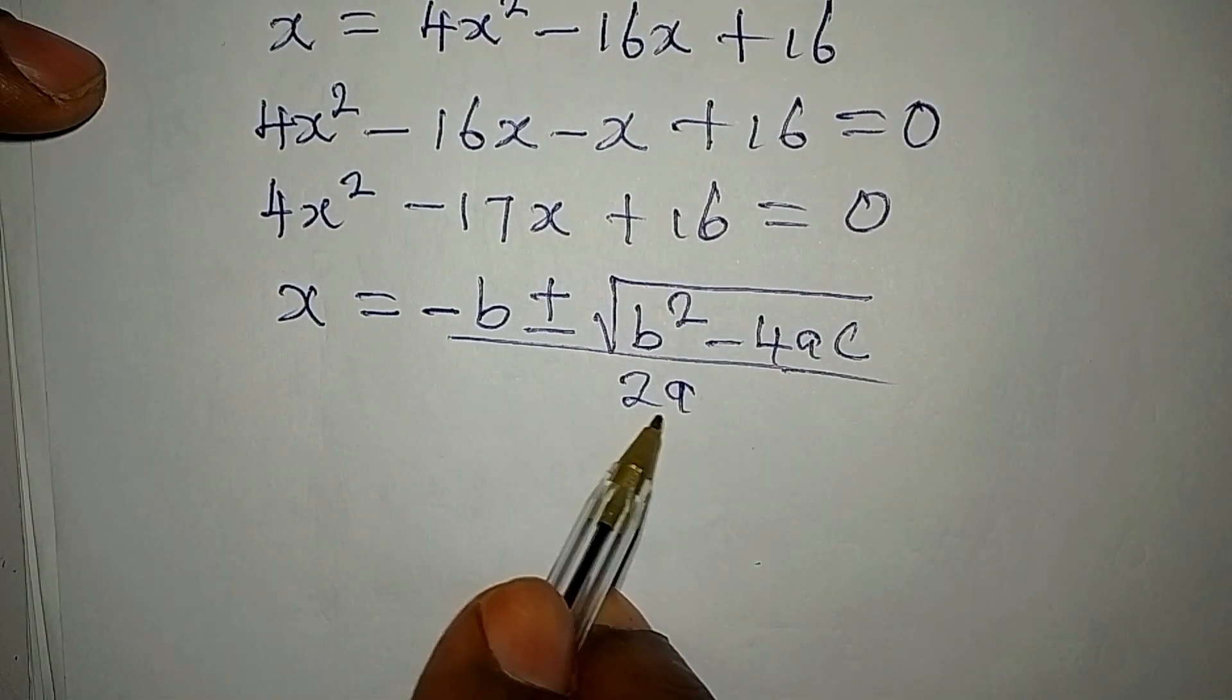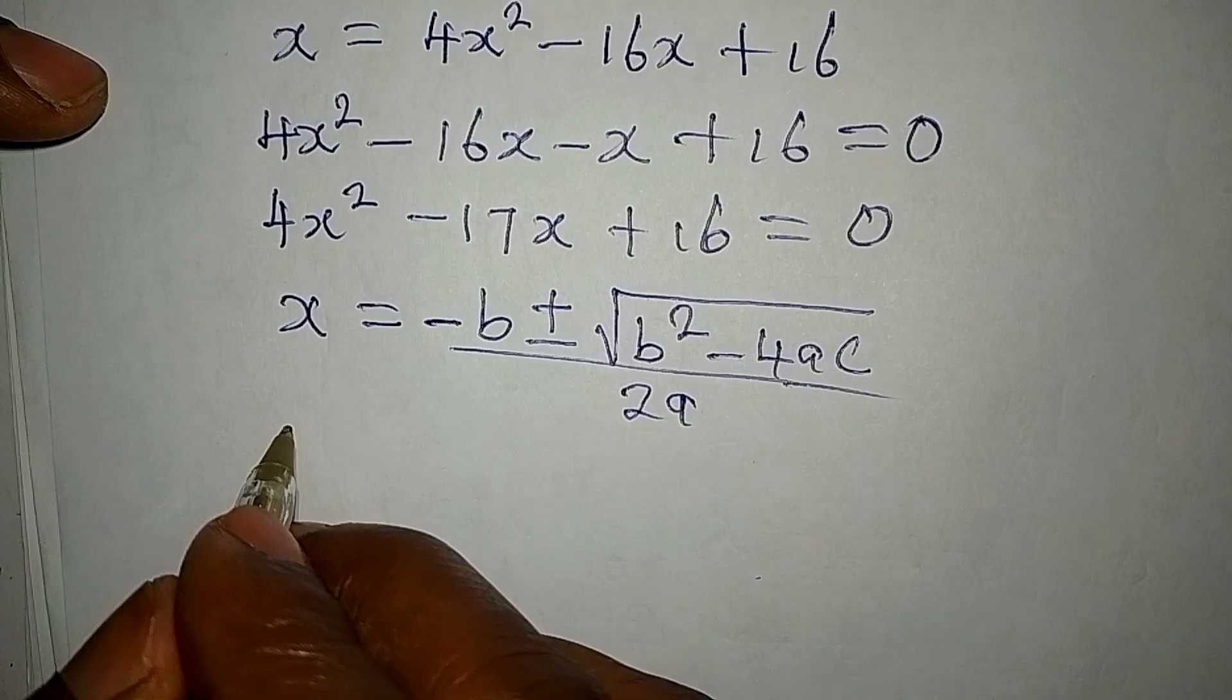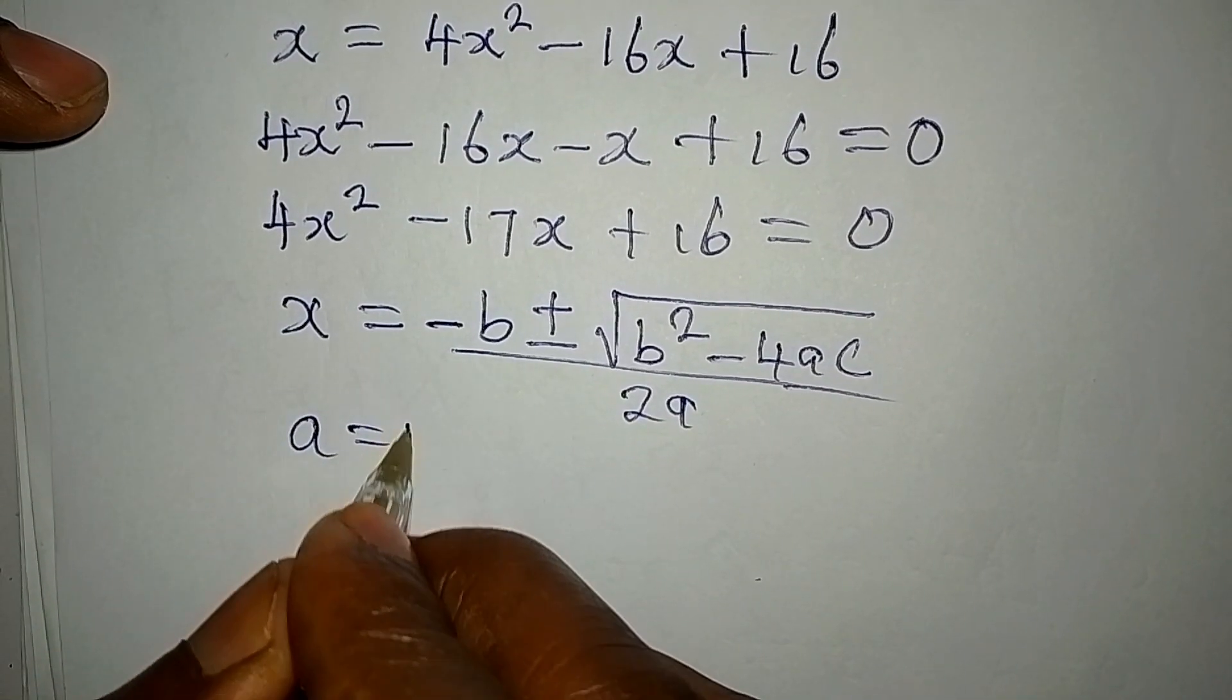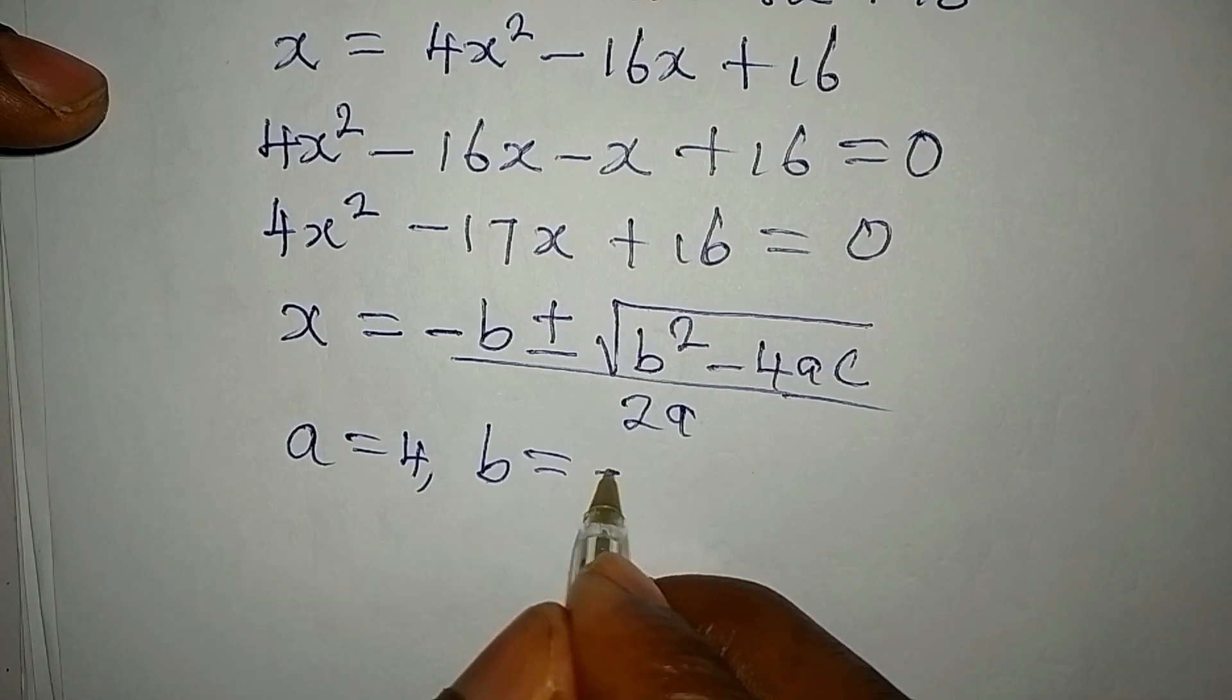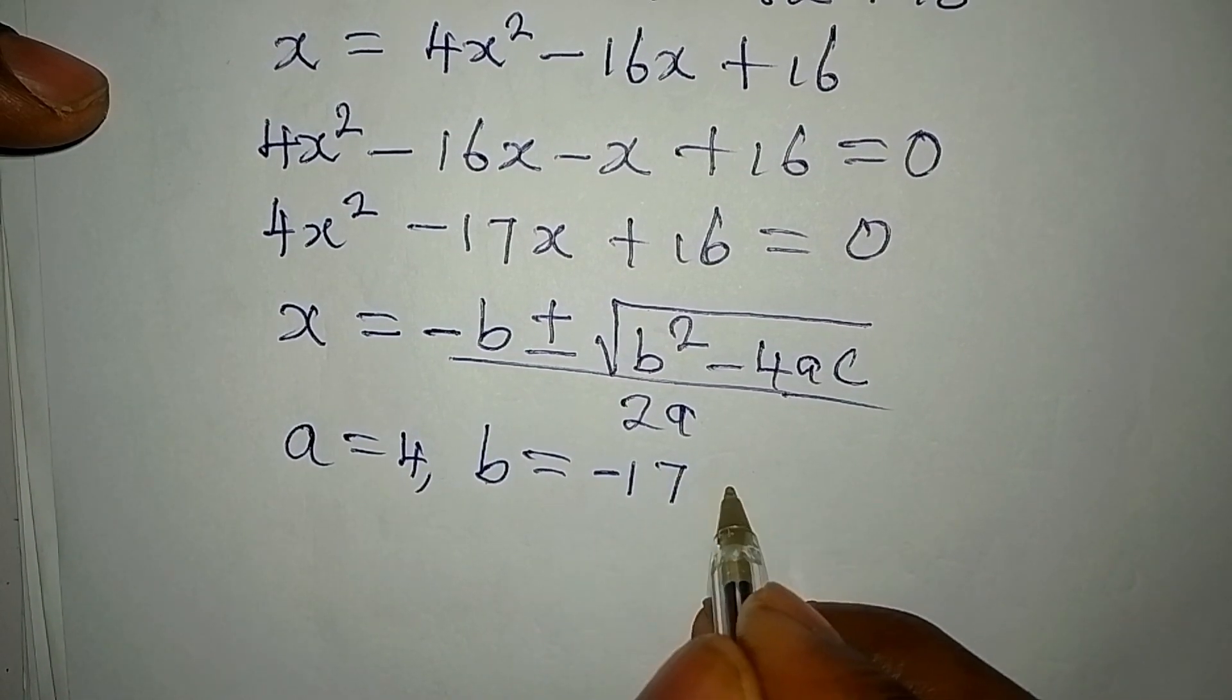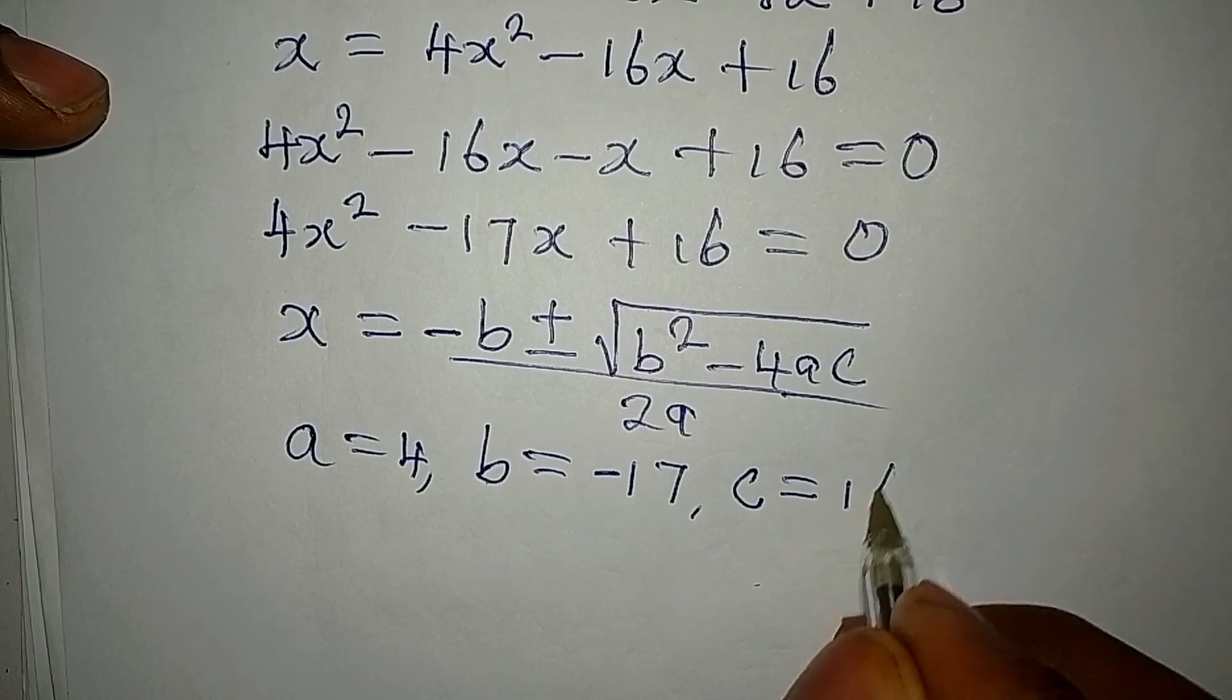Our a there stands for the coefficient of x squared, and that means that our a is 4. Our b stands for the coefficient of x. That means our b is minus 17. And then c stands for the constant, and that is 16.